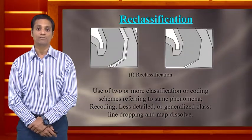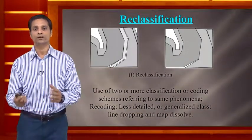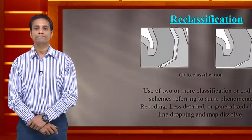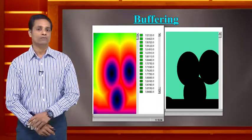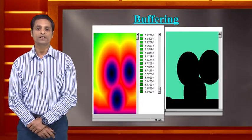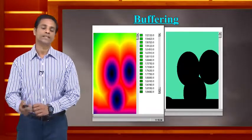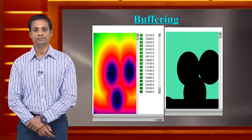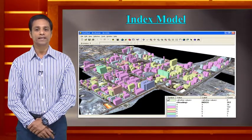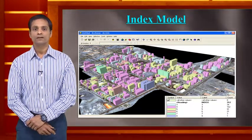Buffering analysis helps determine the coverage area of overhead water tanks and identify zones likely to face water scarcity. An index model can predict various vulnerability indices — rated from three to eight — shown in different colors for different buildings. Data modeling is systematic: analysis is performed on input data to produce output, such as identifying soil area suitable for specific cultivation given available water intensity.